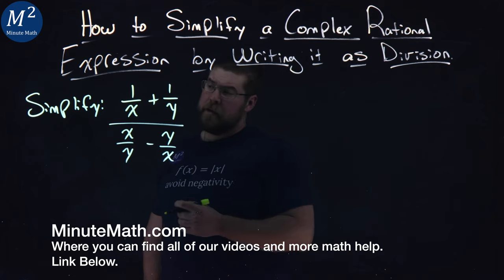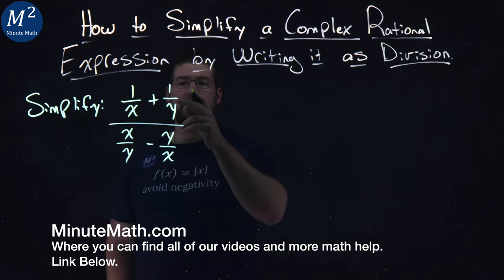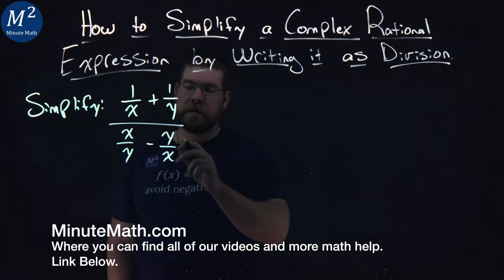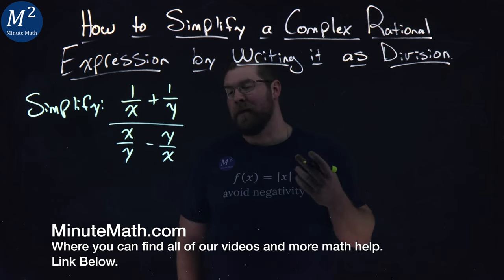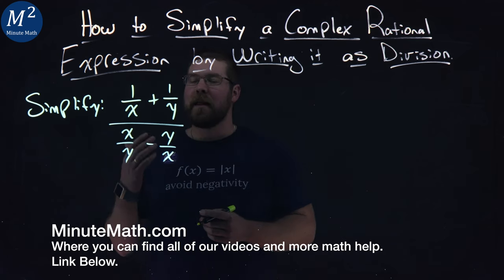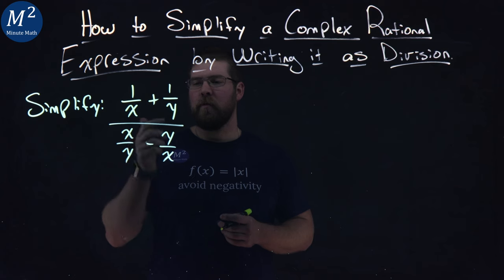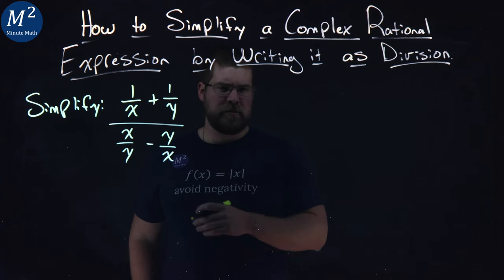We're given this problem right here. Simplify: 1 over x plus 1 over y, all over x over y minus y over x. We've got a lot of division here. 1, 2, 3, 4, and 5 divisions really going on.